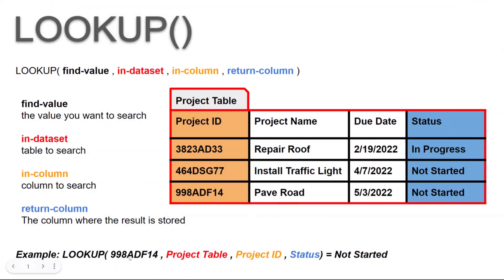To wrap this up, let's look at an example. We're going to look up the value 998ADF14 in the project table using the Project ID column and the Status column. AppSheet will search for 998ADF14 in the project table, look in the Project ID column for that value, and then go over to the Status column to retrieve the result. In this case, that's 'Not Started' — so 'Not Started' would be the output of that lookup function.